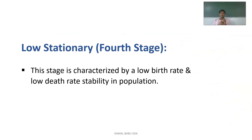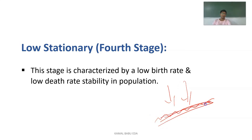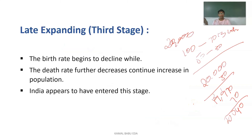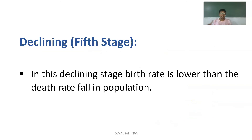The fourth stage is Low Stationary, characterized by a low birth rate and low death rate, with population stability. The birth rate and death rate both decrease, and the population stabilizes compared to the earlier expanding stages. The fifth stage is the Phase of Declining, where the birth rate falls lower than the death rate, leading to a falling population. The birth rate becomes very low while the death rate becomes relatively higher.